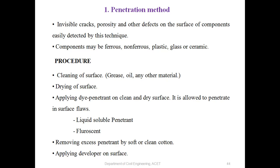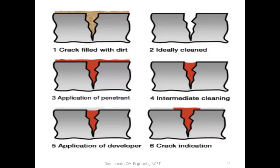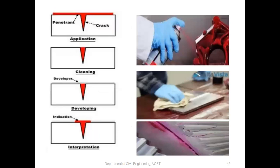Procedure for the penetration method: clean the surface of grease, oil, and other material; dry off the surface; apply a penetrant on the clean dry surface and allow it to penetrate into surface flaws — two types are used: liquid soluble penetrant and fluorescent penetrant. Then remove excess penetrant with a soft clean cloth and apply developer on the surface. Stages: crack filled with dirt, ideally cleaned, application of penetrant, intermediate cleaning, application of developer, and interpretation of indications.